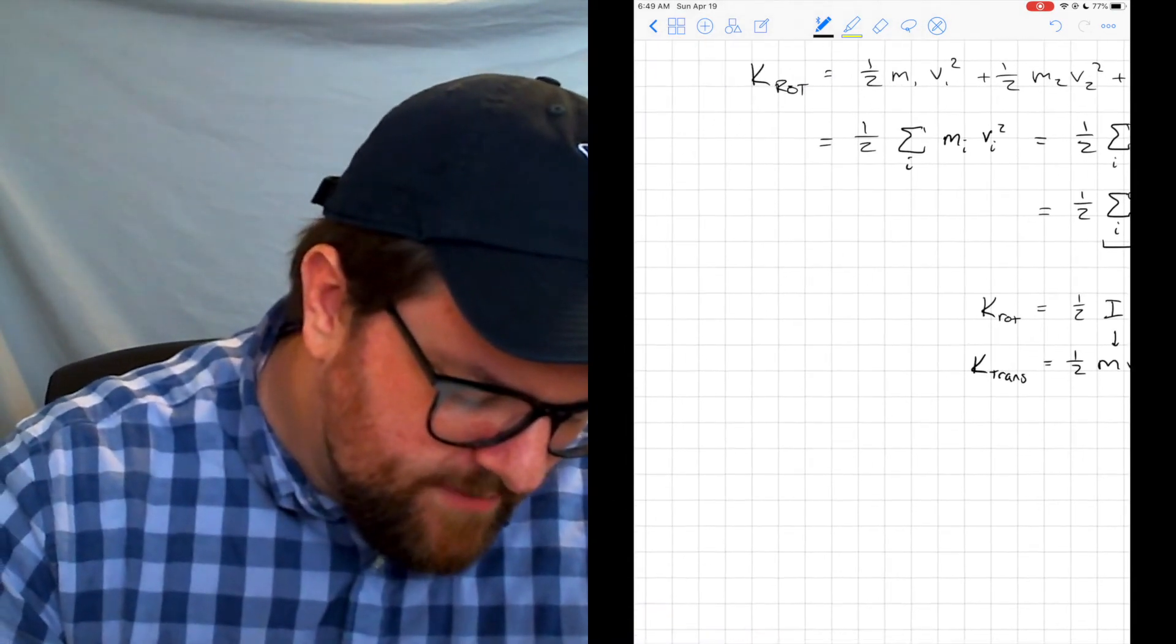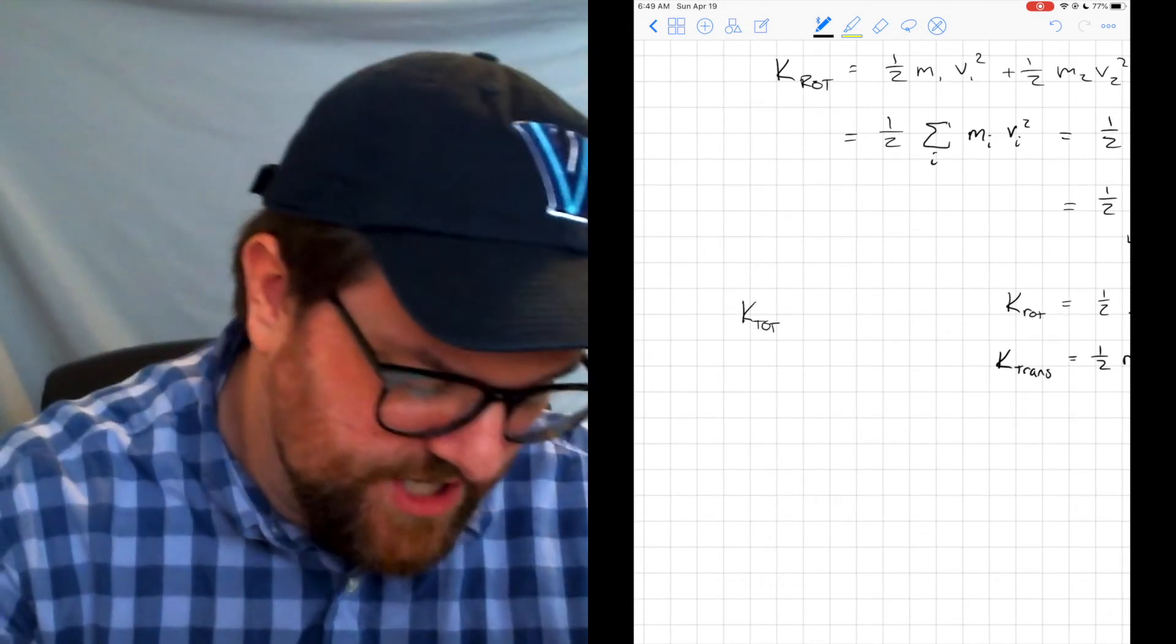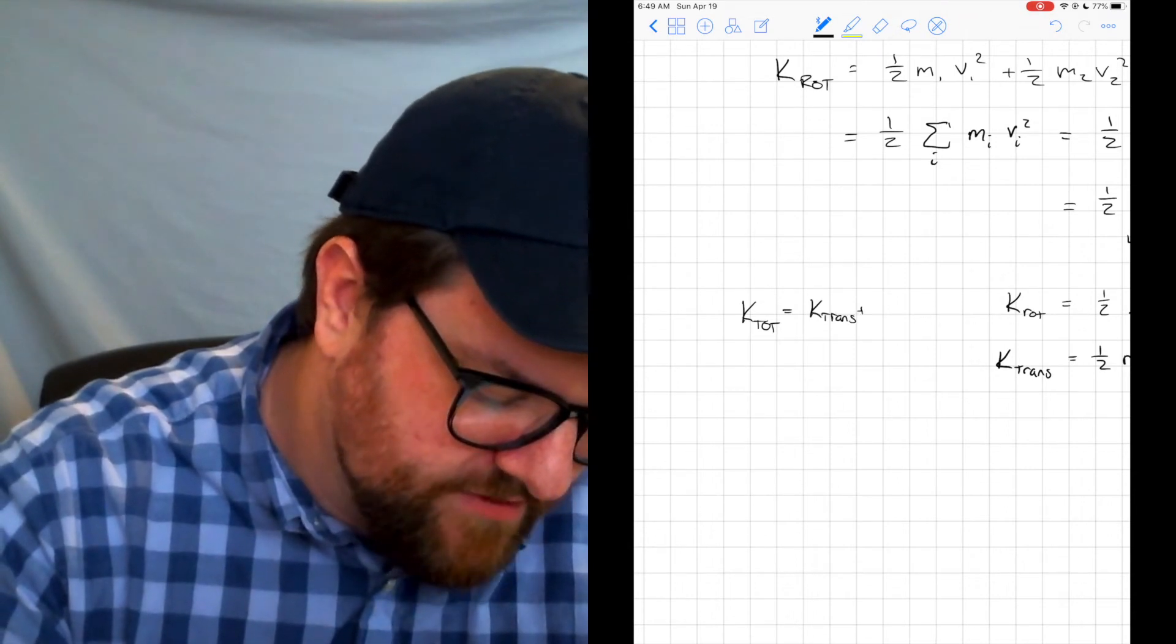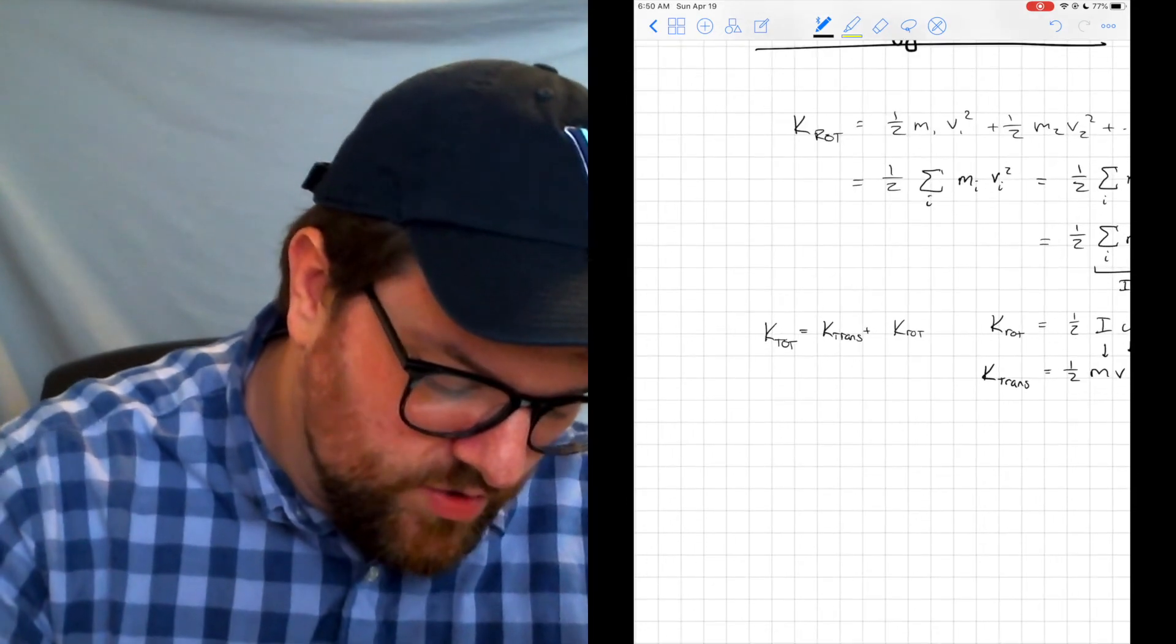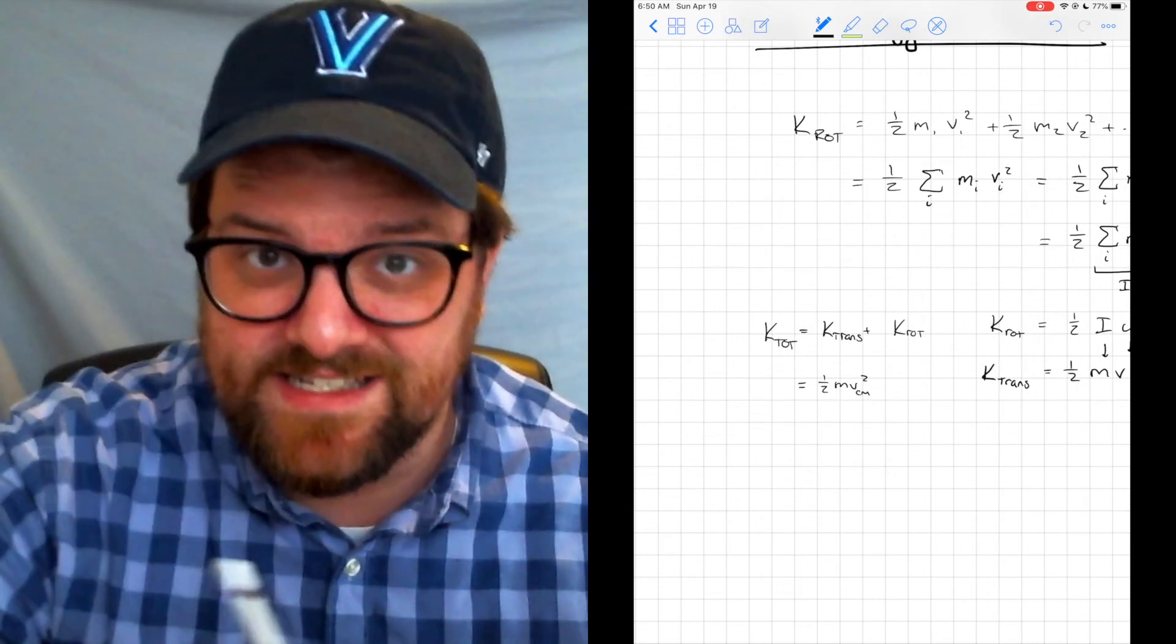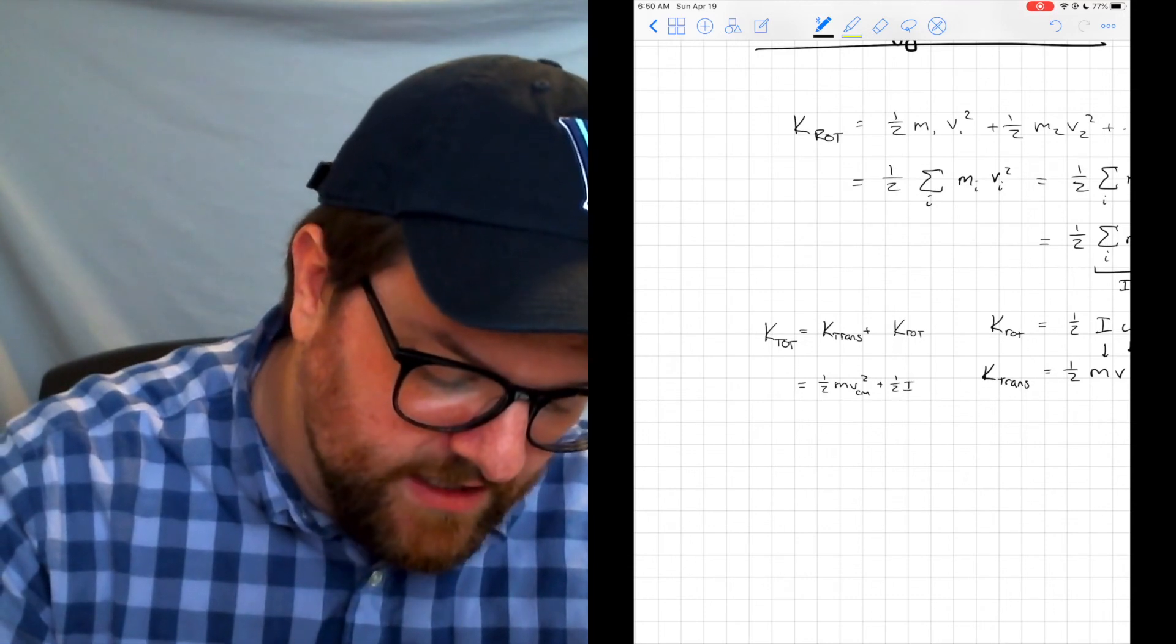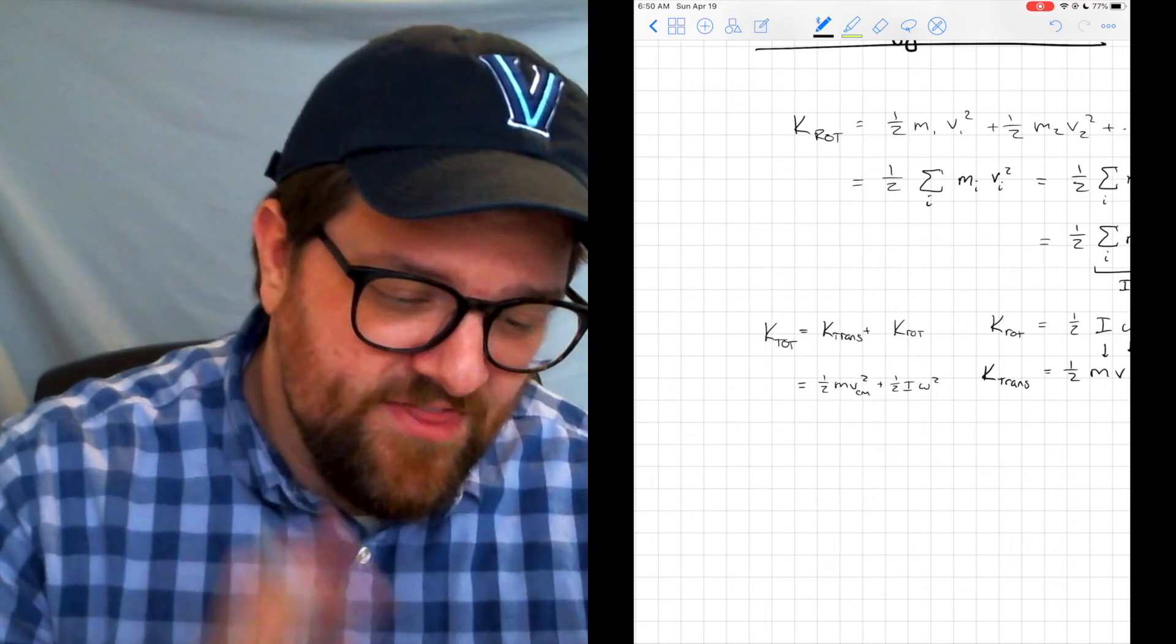So when I think about K_total, my total kinetic energy, I need to consider not only the translational side of things, but also the rotational side. So total kinetic energy is going to be 1/2 m v_center of mass squared—that's the translation part—plus 1/2 Iω² if we are rotating. So that is rotational kinetic energy.